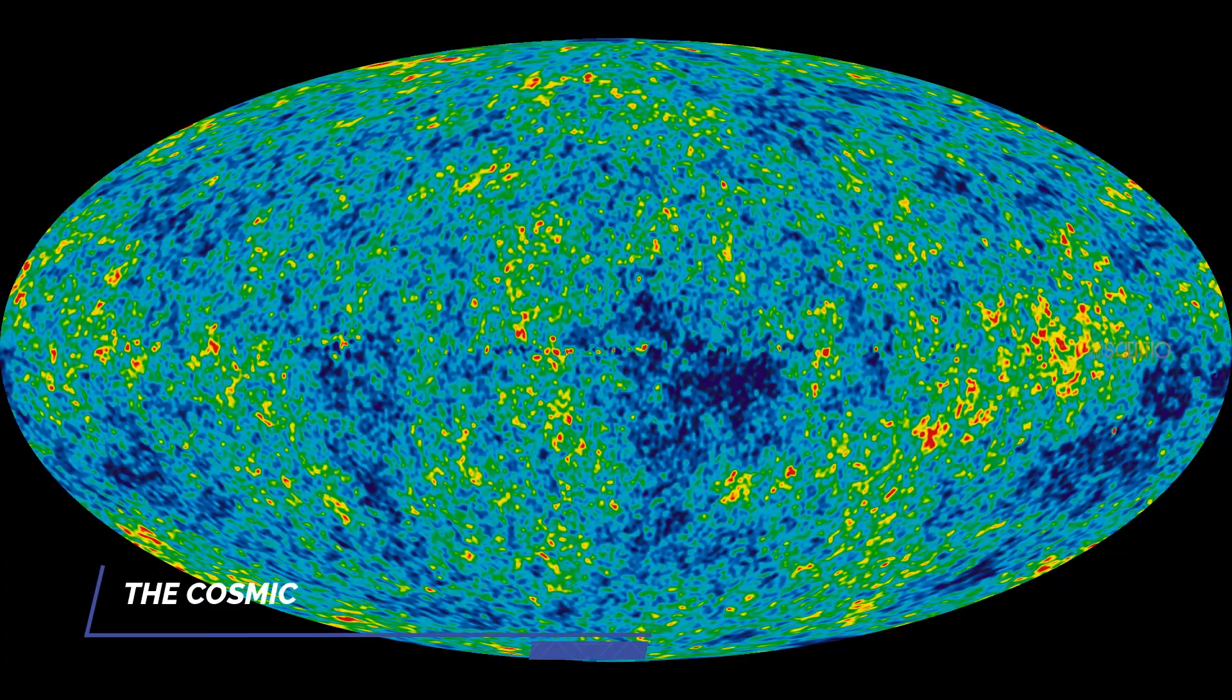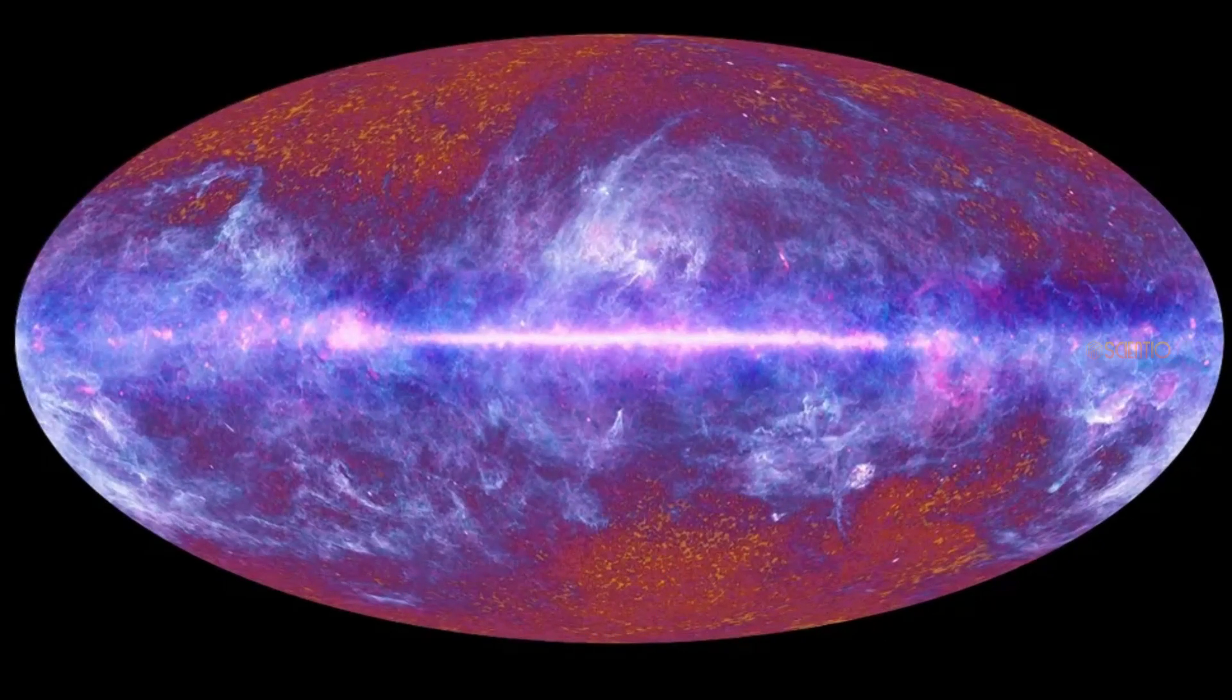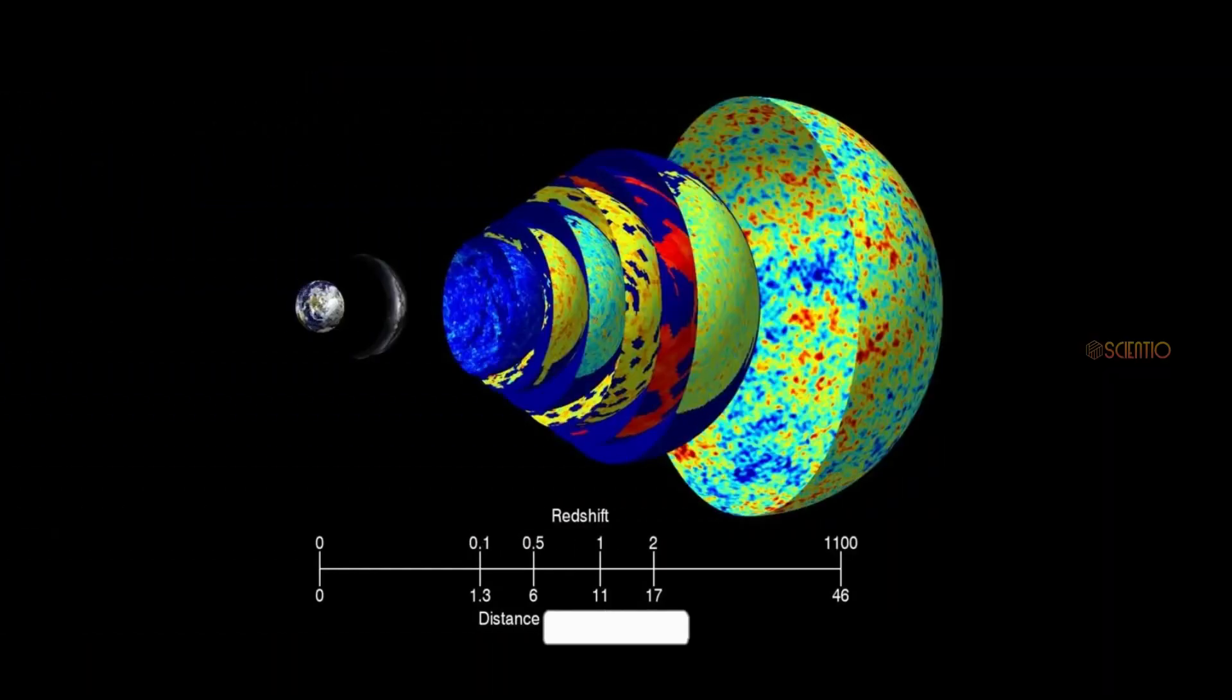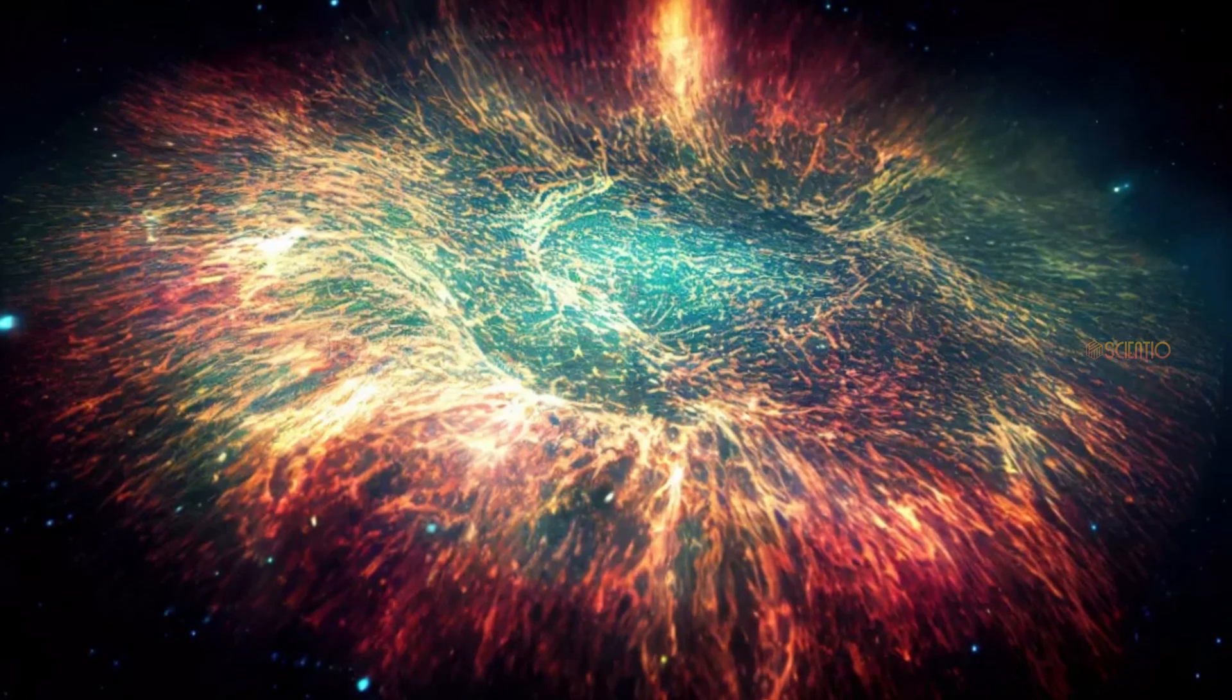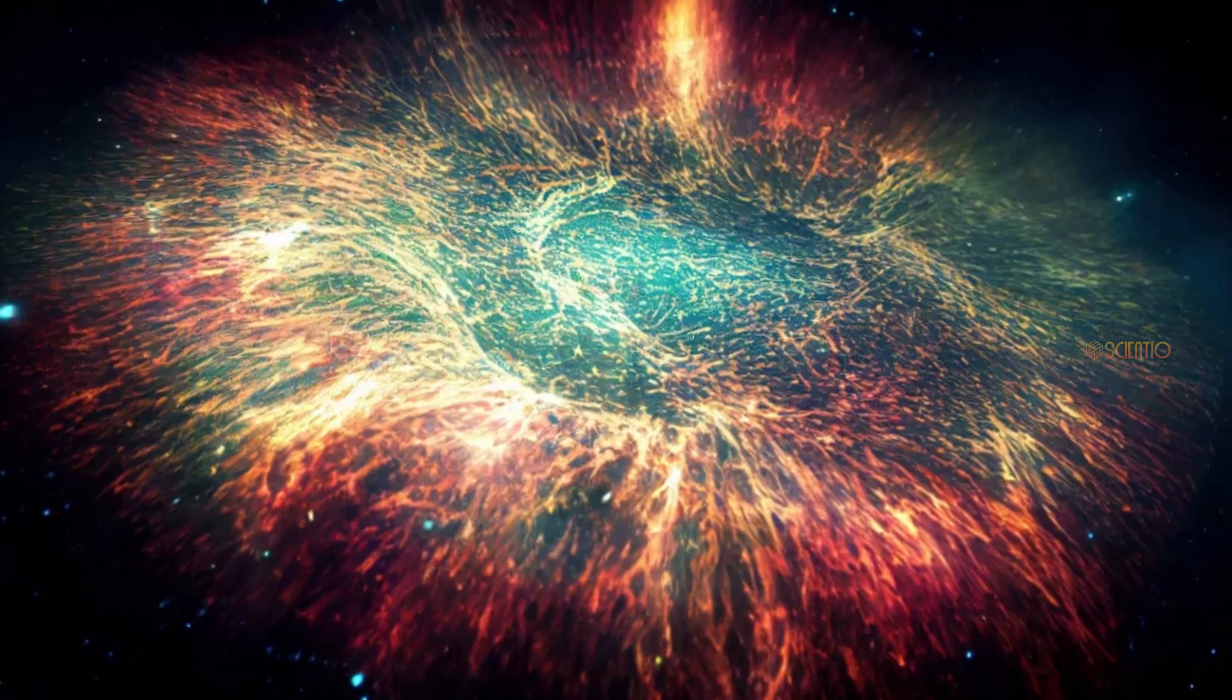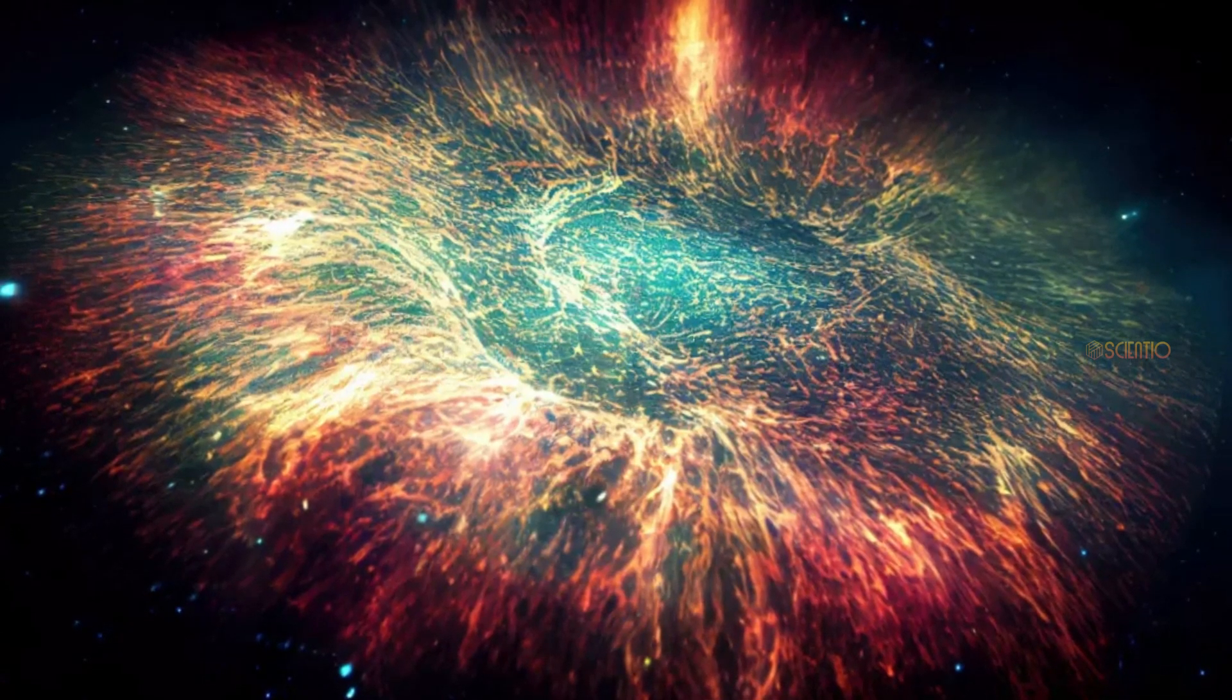The Cosmic Microwave Background Radiation. This is a pervasive background radiation that permeates the entire universe and is thought to be a remnant of the Big Bang. It was first discovered in 1964, and has since been studied extensively as a means of understanding the structure and origins of the universe.